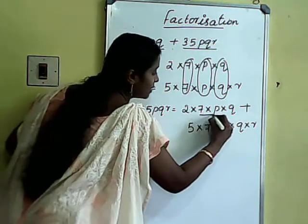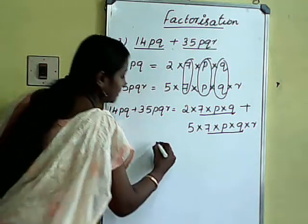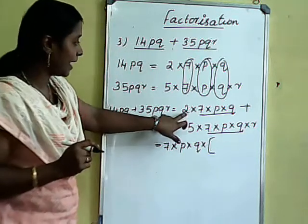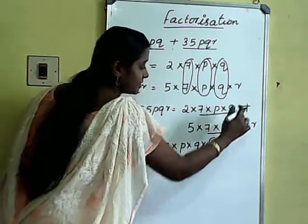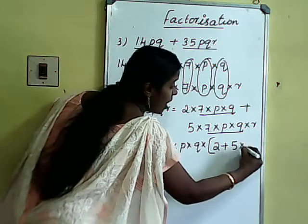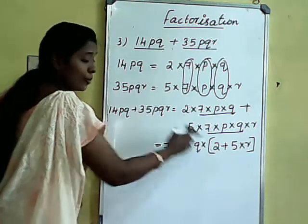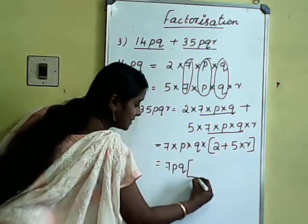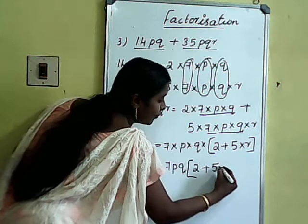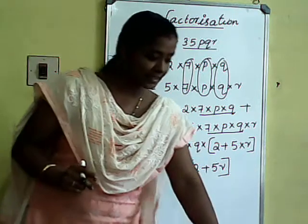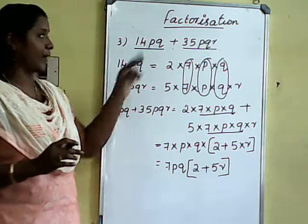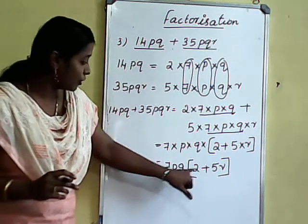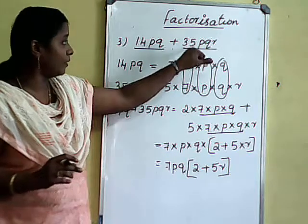Underline the common factors: 7, p, q. Take 7 into p into q outside the bracket. The remaining term in the first part is only 2. Plus, the remaining terms in the second part are 5 into r. So we get 7pq into (2 plus 5r). Applying distributive law: 7pq into 2 is 14pq, and 7pq into 5r is 35pqr.